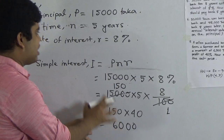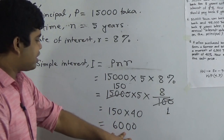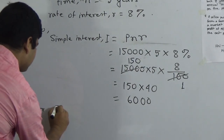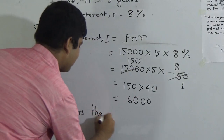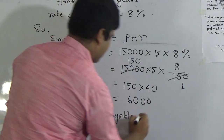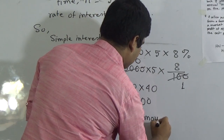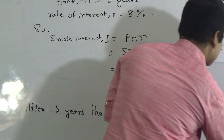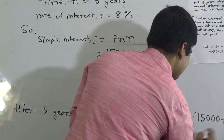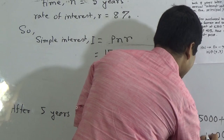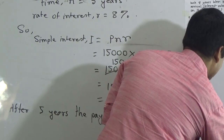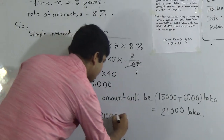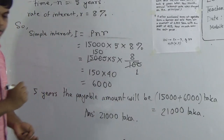This is the simple interest. He needs to pay back this simple interest along with the principal. So, after 5 years the payable amount will be 15,000 plus 6,000 taka, which equals 21,000 taka. This is the answer. As our solution is done we must write the answer — if you don't write the answer then marks will be deducted from your answer script.